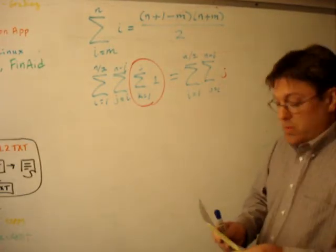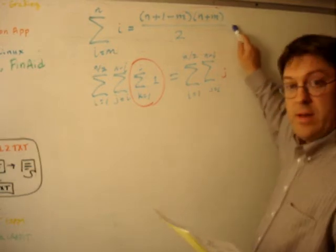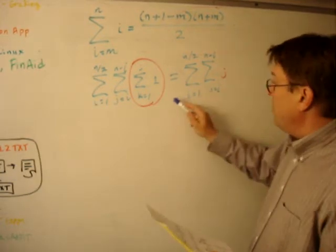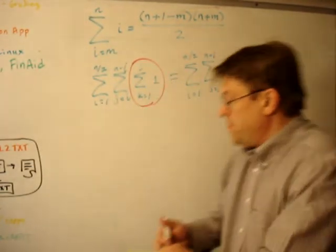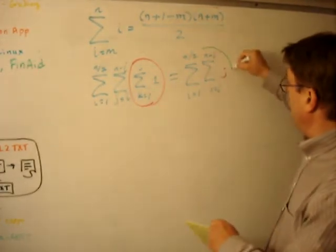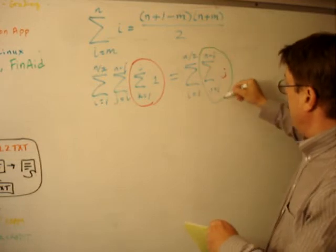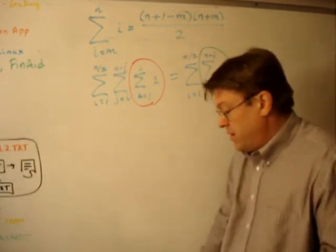Now the tricky part comes when we apply this identity up here and we reduce this part of it. We're going to reduce that part of the equation.